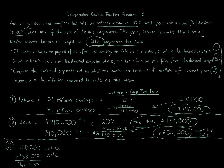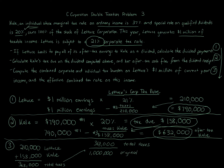That $368,000 is the combined corporate and individual tax burden. For the effective rate, you take the $368,000 total taxes and divide by the original earnings of $1 million by the corporation. The formula is: total taxes paid by both divided by the $1 million original earnings by the corp. When you calculate that, it equals 36.8%. That is the answer for the effective combined tax rate percentage.